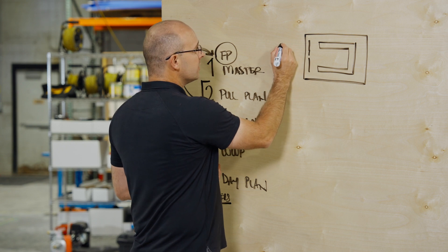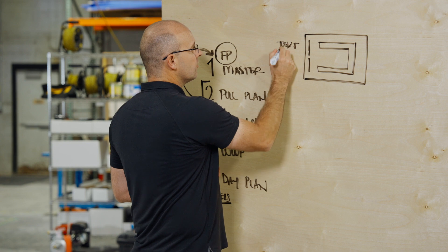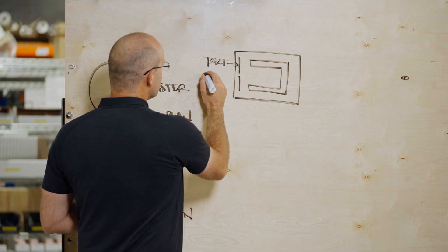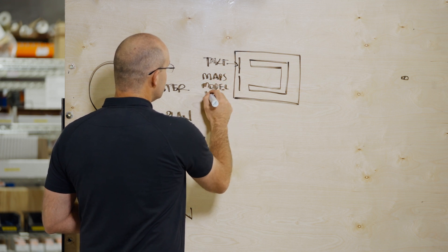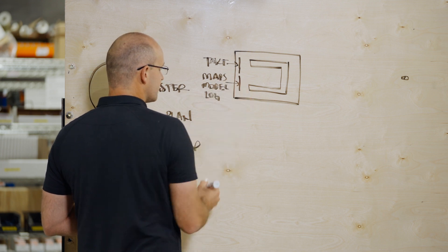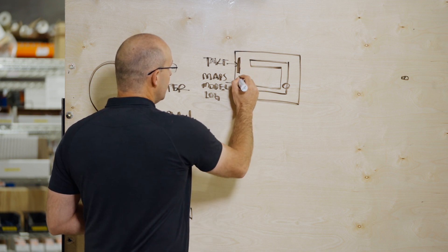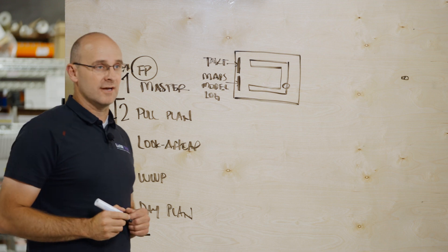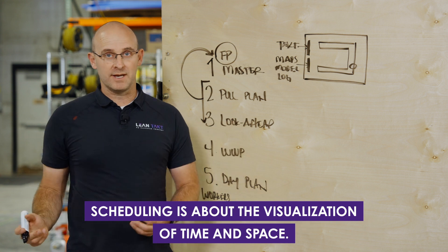Number one, I want to be able to pull up my tact plan on one screen right here. On the second one, I want to be able to pull up my maps, my model, my logistics. I want to be able to pull up anything on this second screen. If I'm back here leading the meeting, I can show people the schedule and the visualization of the space to the left. Remember, scheduling is always about the visualization of time and space.